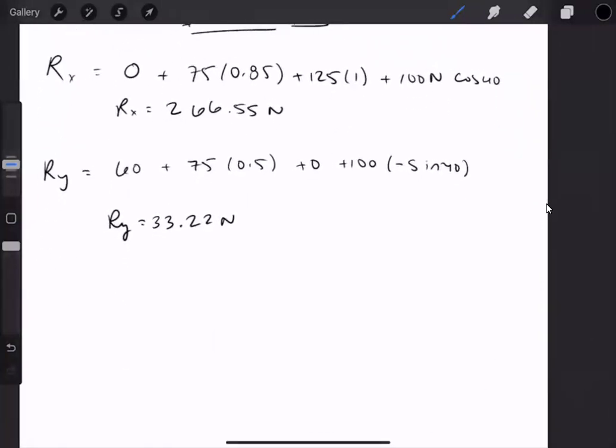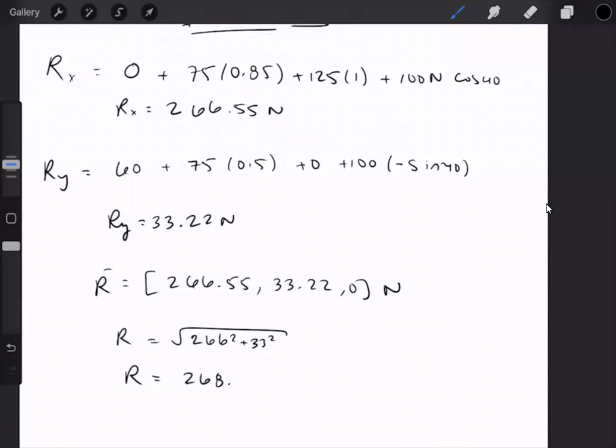If I was to write this down in full vector form, it would be 266.55, 33.22, 0 newtons. If I wanted to, I could find the magnitude. You'll want to carry through all the units. R being 268.612 newtons.